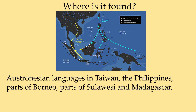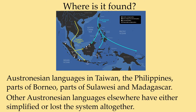The Austronesian languages in Taiwan, the Philippines, parts of Borneo, parts of Sulawesi — that interesting-looking island right next to Borneo — and Madagascar have this structure. Other Austronesian languages elsewhere have either simplified or lost the system altogether. In Polynesian languages you don't see this. In Palauan there's a restructuring — it's changed into something more like European languages. In Malay it has become more of an active-passive kind of structure. So it's changed or become simplified in different ways in different languages.